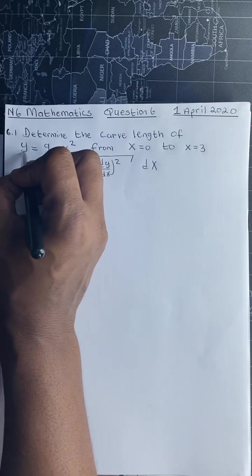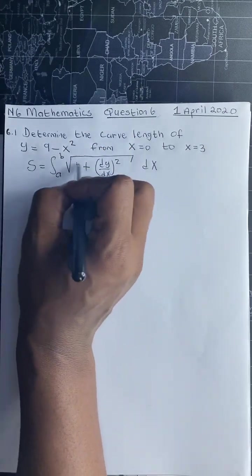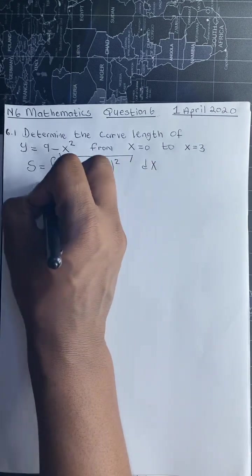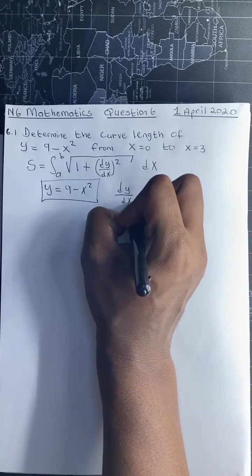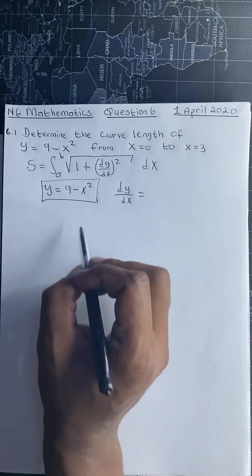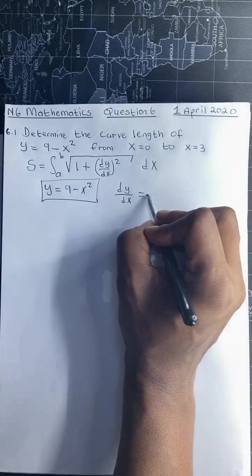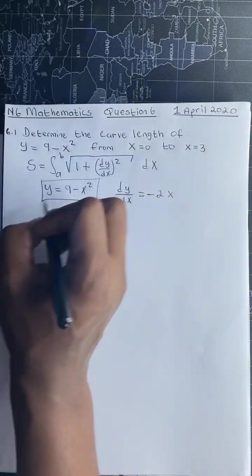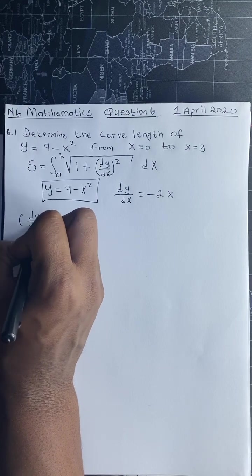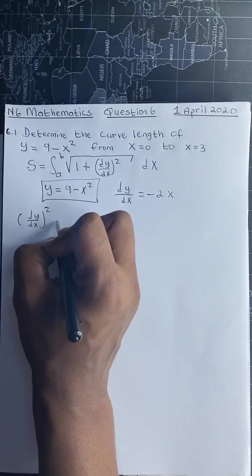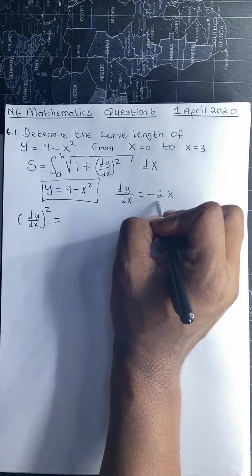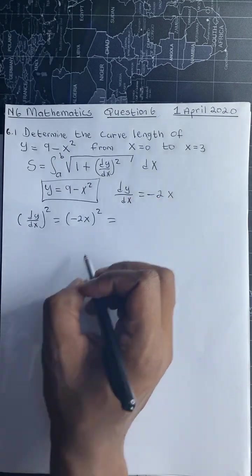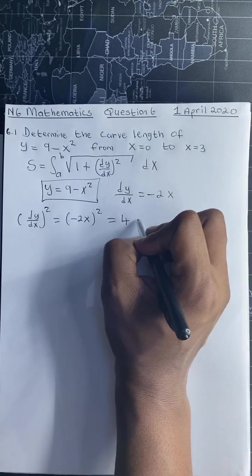We have to differentiate y, square it, and then add 1 to it. We have y equals 9 minus x squared, so we differentiate with respect to x. The derivative of 9 is 0 and the derivative of negative x squared is negative 2x. Inside the square root, we square this dy/dx, so since dy/dx equals negative 2x, we square it to get 4x squared.